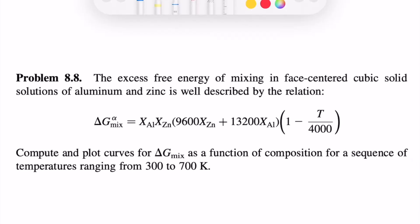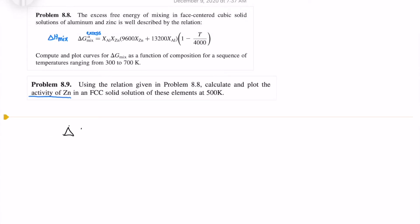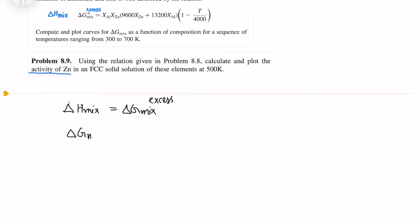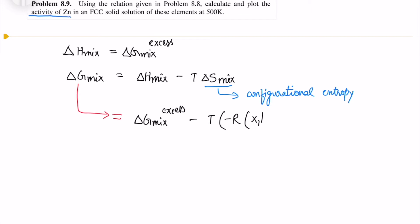In the 8.8 question we are given the delta H mix which is the delta G excess and we have to find the activity of zinc. So as you know that the delta H mix is nothing but the delta G mix excess. So now we will write the delta G mix of the total solution and we know delta S mix is configurational entropy. So we will write down the terms.